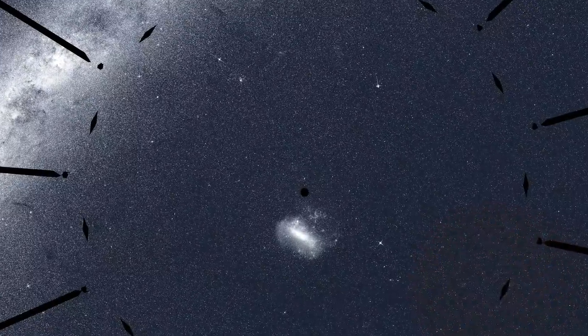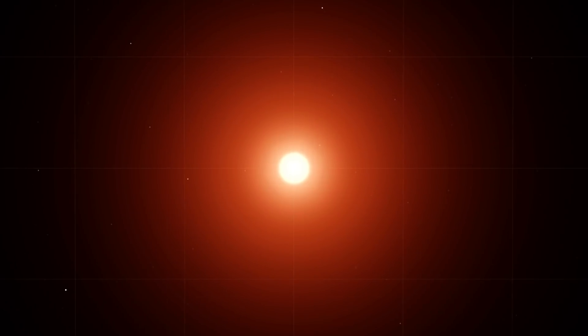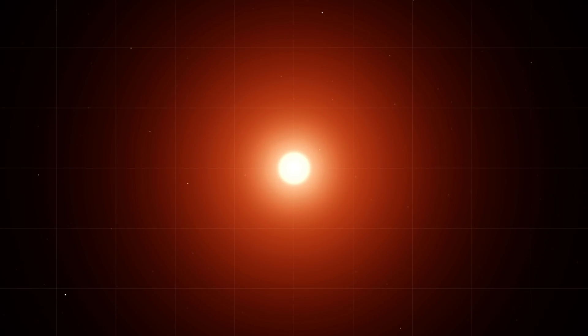One star where TESS saw transits is TOI-700. It's a red dwarf about 40% the mass and size of our Sun, and roughly half its temperature.